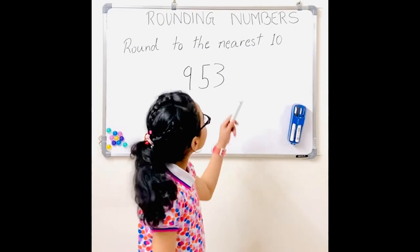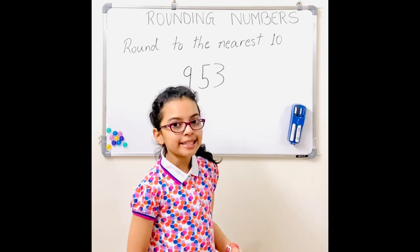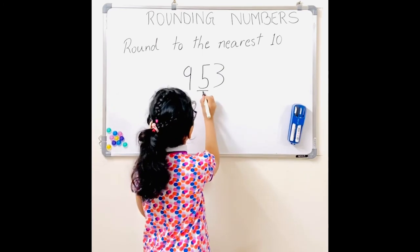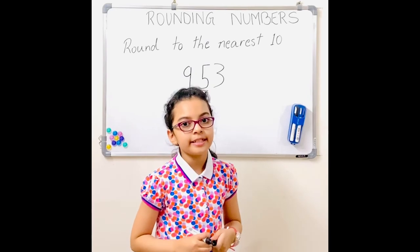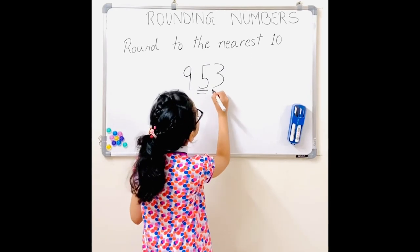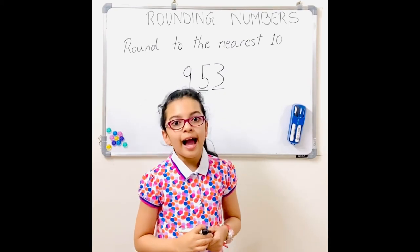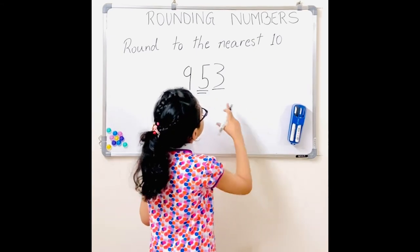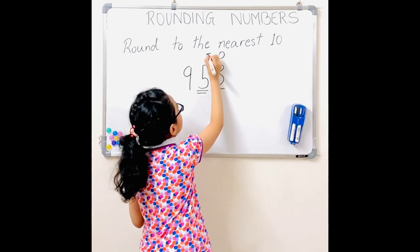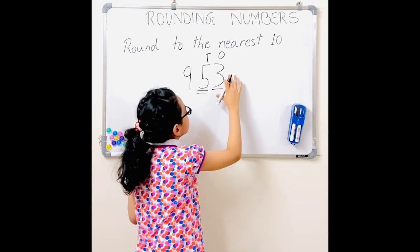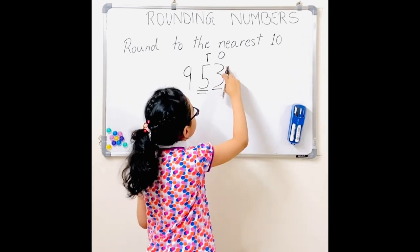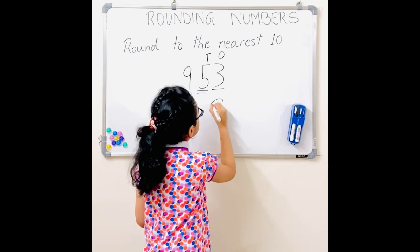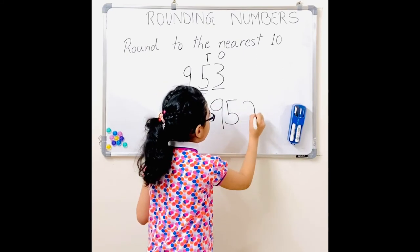Now I'm back with rounding to the nearest ten. This time my number is 953. In the tens place the digit is 5. But when we round to the nearest ten, we check the digit in the ones place — and that's 3. 3 is less than 5, and always remember 0, 1, 2, 3, 4 — round down. So we round down, making the digit in the ones place 0, but leaving the digits in the tens and hundreds place the same. So then we get 950.